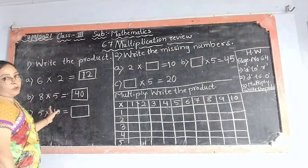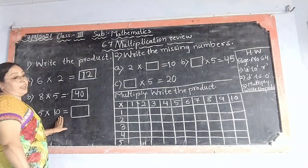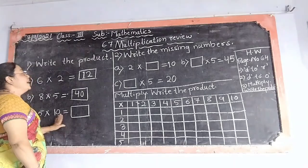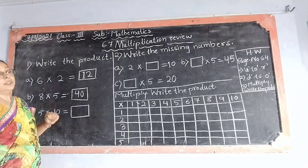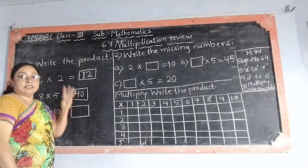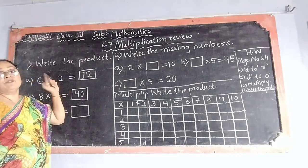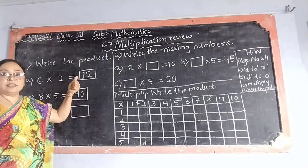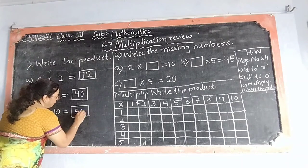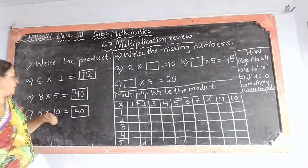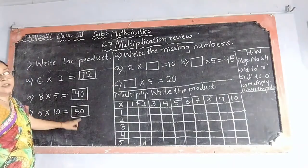Now the third example: 5 multiplied by 10. What we have to do? We have to read 10's table till 5. 10's table is very easy: 10 1's are 10, 10 2's are 20, 10 3's are 30, 10 4's are 40, and 10 5's are 50. So the product is 50.